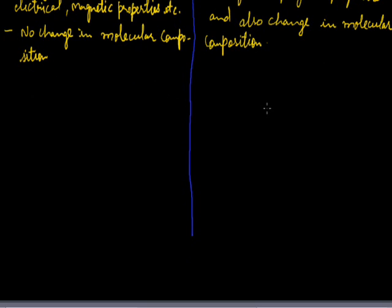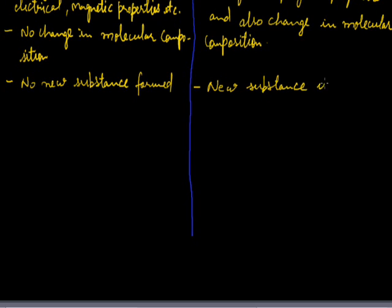In physical changes, no new substances are formed. In chemical change, new substances form. The new substance formed has entirely different properties from the reactants.